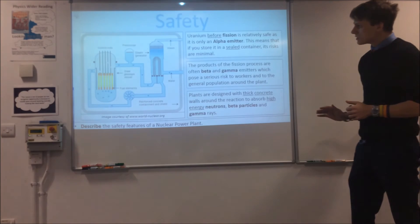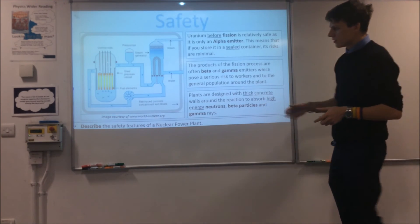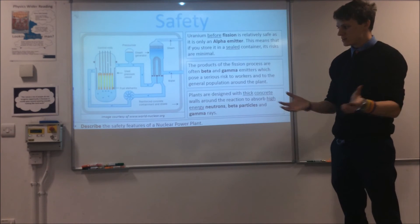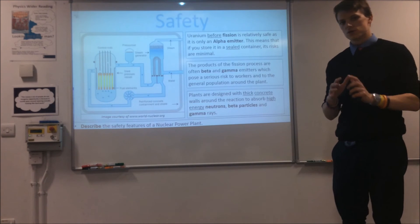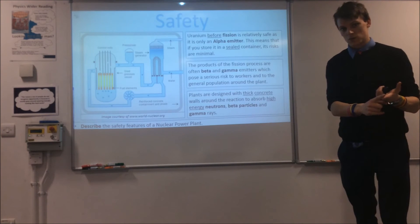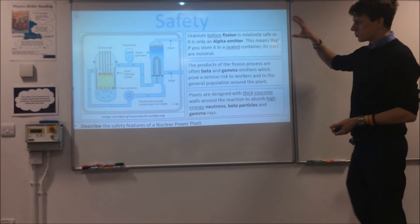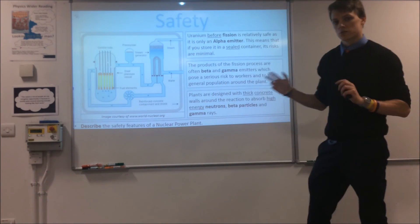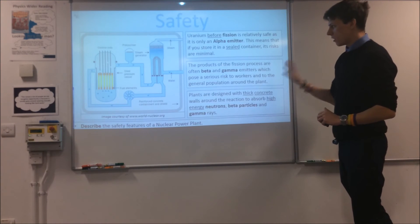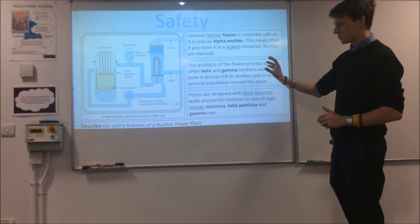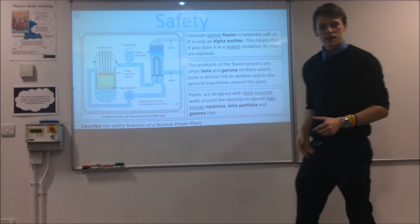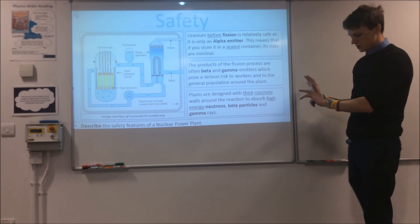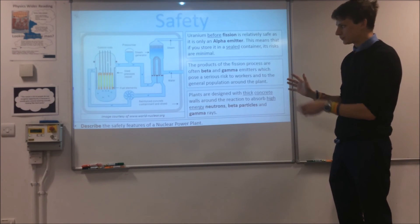Looking at the safety features of a nuclear power plant: the whole system is embedded within a reinforced concrete containment shield, which stops the very dangerous radiations produced from the reaction escaping and damaging workers and the surrounding environment. Uranium initially is only an alpha emitter so we just need a sealed steel container to deal with that, but the products of the reaction are beta and gamma emitters, which are much more dangerous. The thick concrete wall can absorb all of that beta and gamma radiation and also absorb any stray high-energy neutrons that escape from the reaction.